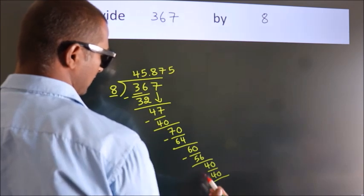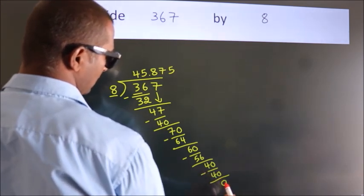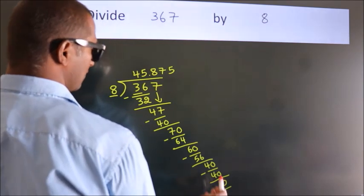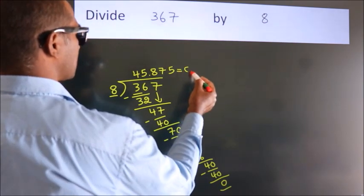Now we subtract; we get 0. Here we got remainder 0, so this is our quotient.